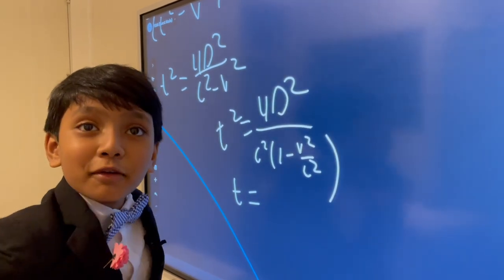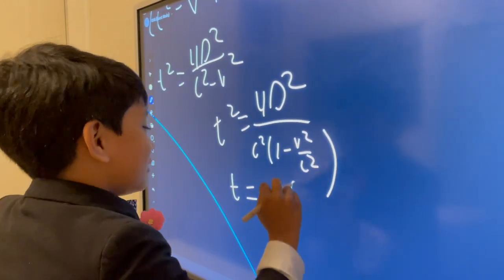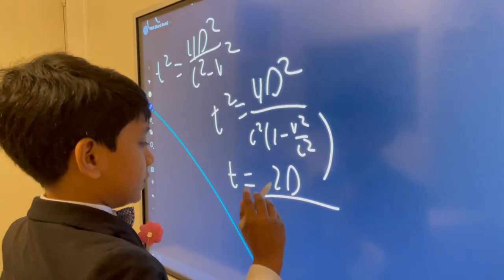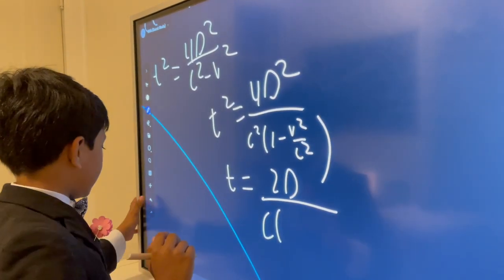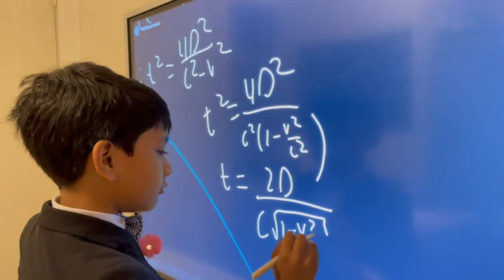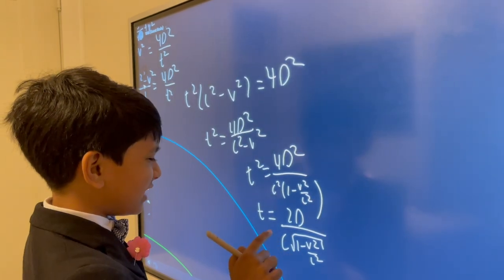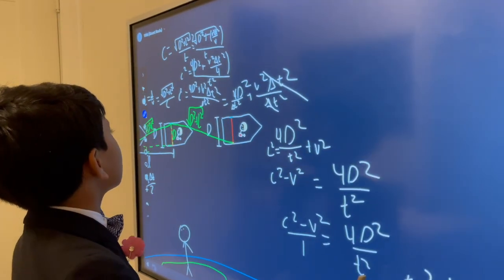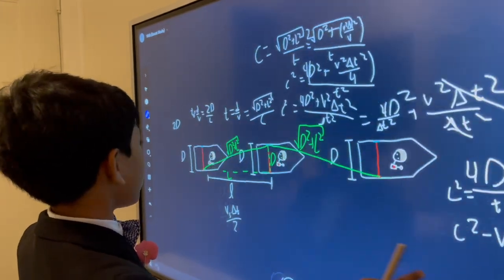We're in the final stages guys: 2d over c divided by the square root of 1 minus v squared over c squared. I guess I have to square root that. Wait a second, 2d over c seems kind of familiar. Can I find that somewhere before?